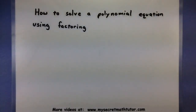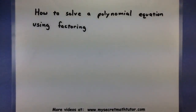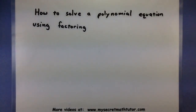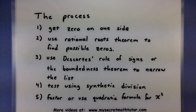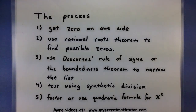For this video, we're going to take a look at how you can solve a polynomial equation using the factoring process. Remember that the factoring process can be quite a lengthy process of theorems and rules that we use to really break this thing down. The very first thing that we'll end up doing is get zero on one side. The reason for doing this is then we can take our polynomial and break it down into all of its factors.